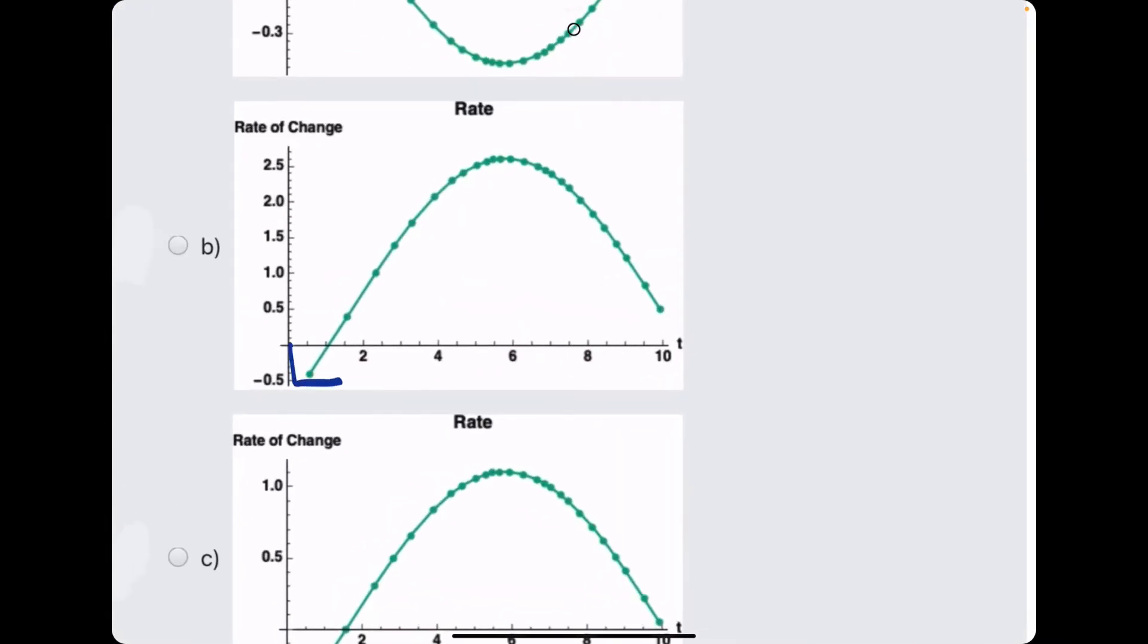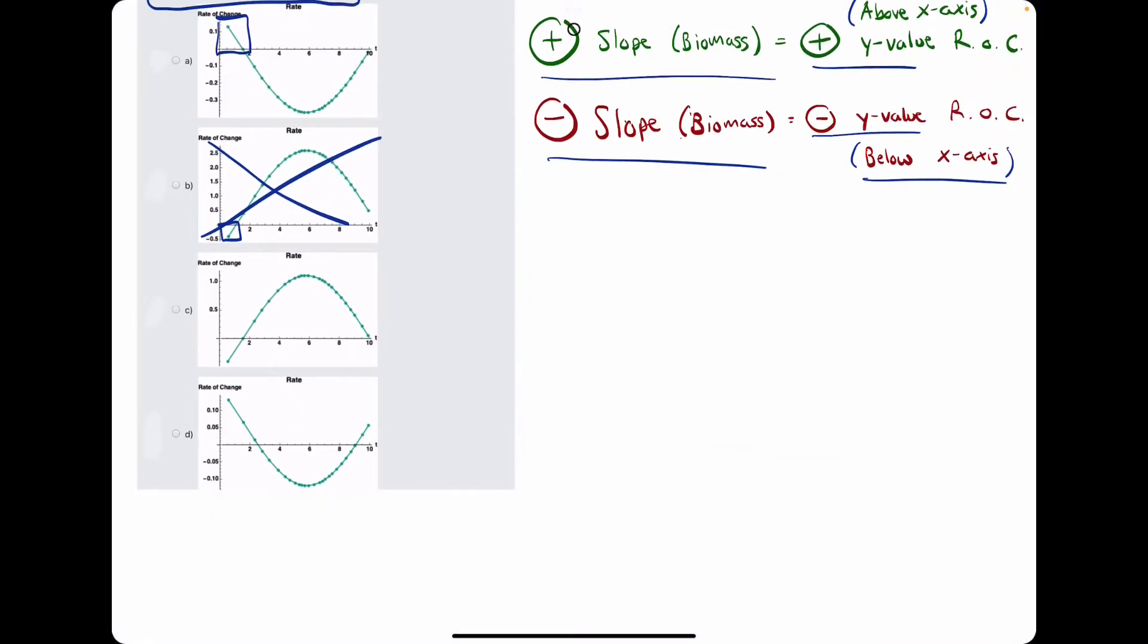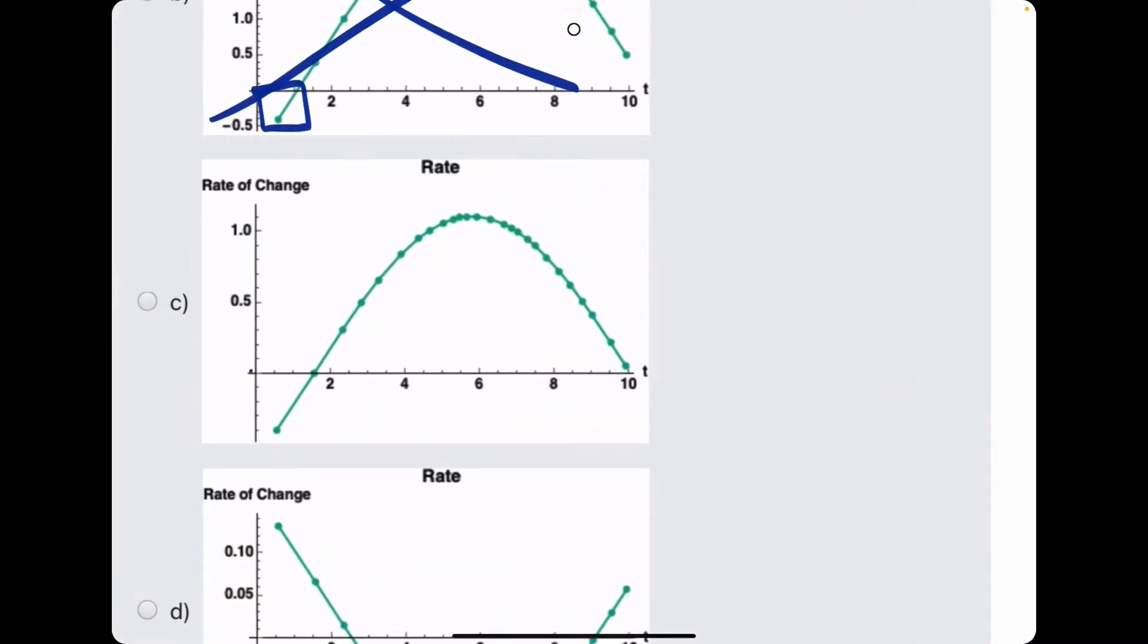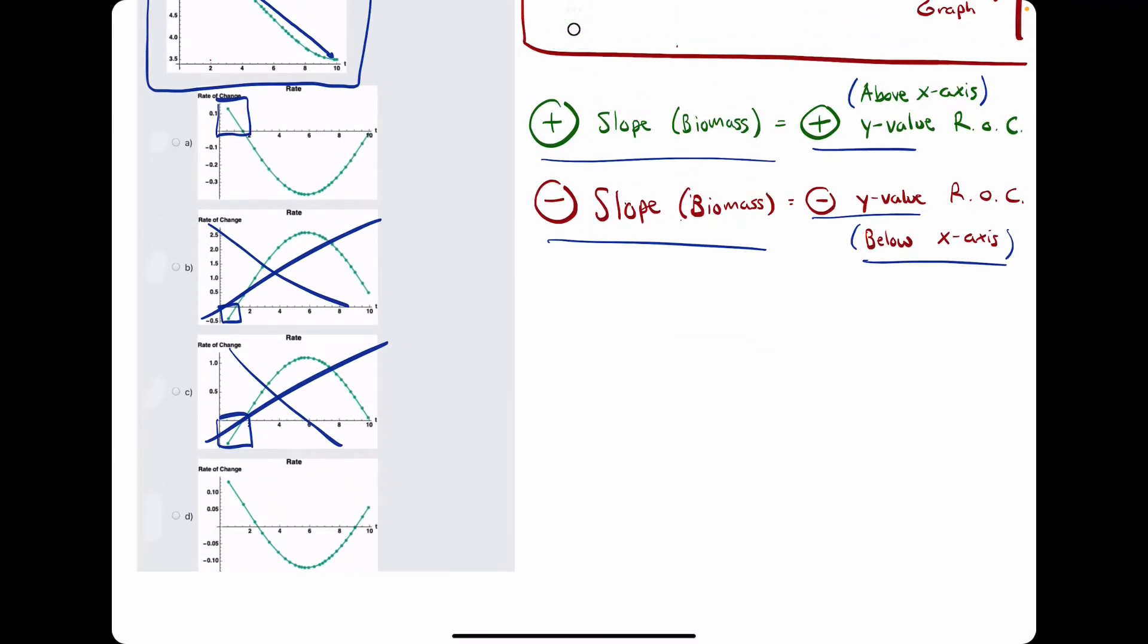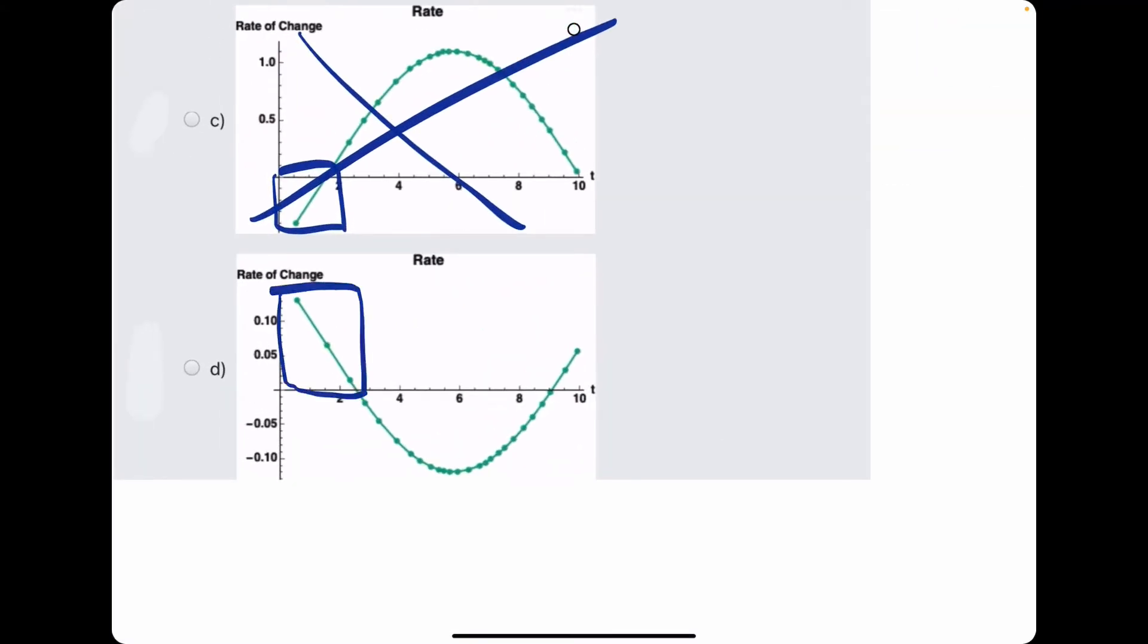B starts below the x-axis at its leftmost point, so we can eliminate option B. Likewise, C starts below the x-axis, so we can eliminate option C, and then option D starts above the x-axis, so that is a good sign.